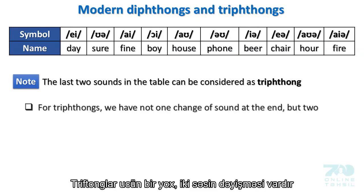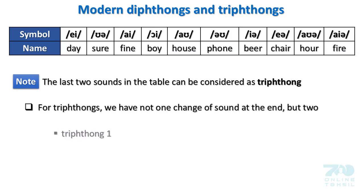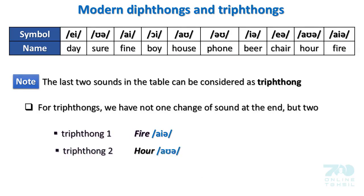Note: the last two sounds in the table can be considered as triphthongs. For triphthongs we haven't one change of sound at the end, but two. Triphthong one: as in fire, air. Triphthong two: as in hour.